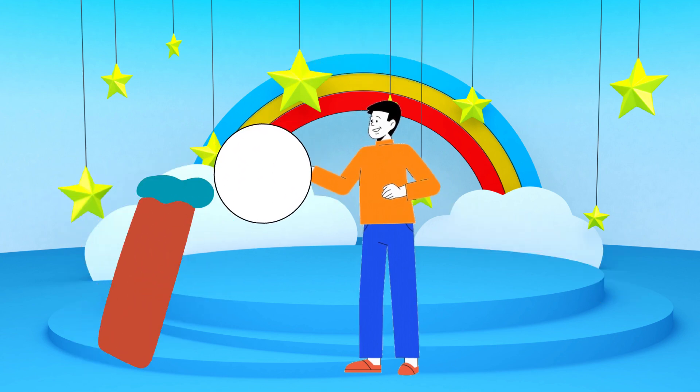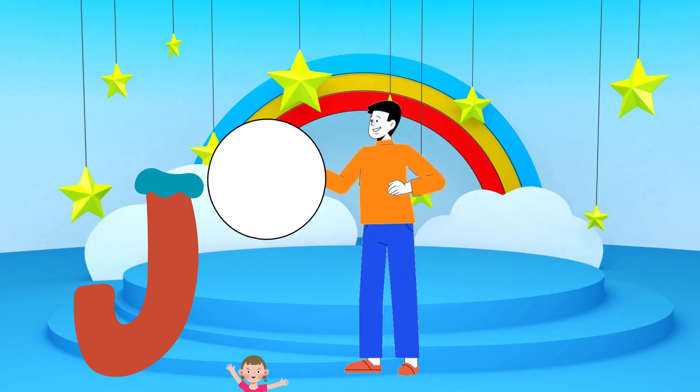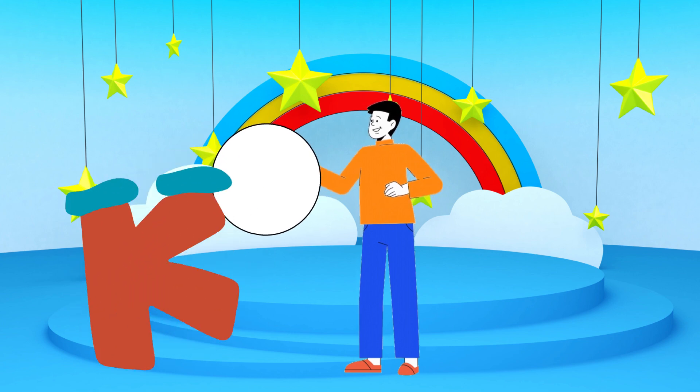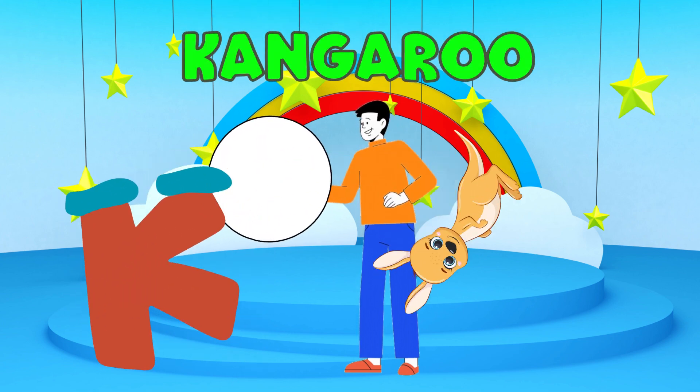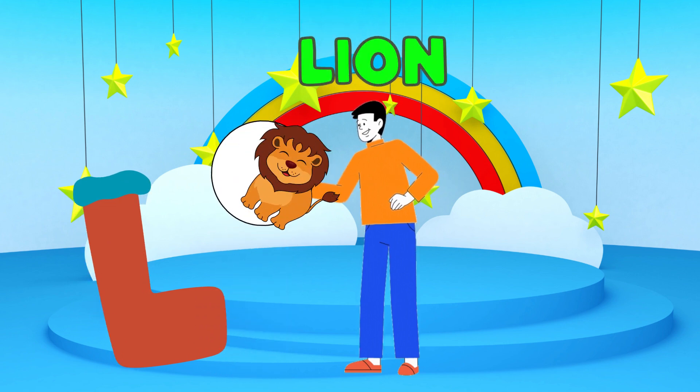I is for igloo, i-i-igloo. J is for jump, j-j-jump. K is for kangaroo, k-k-kangaroo. L is for lion, l-l-lion.